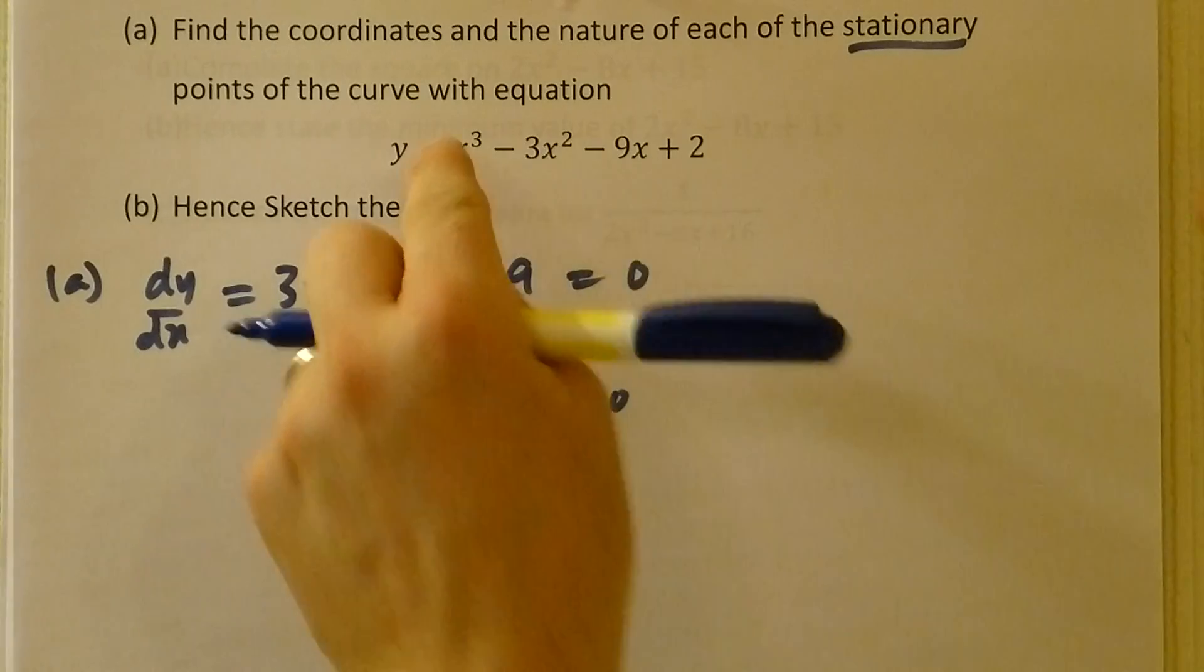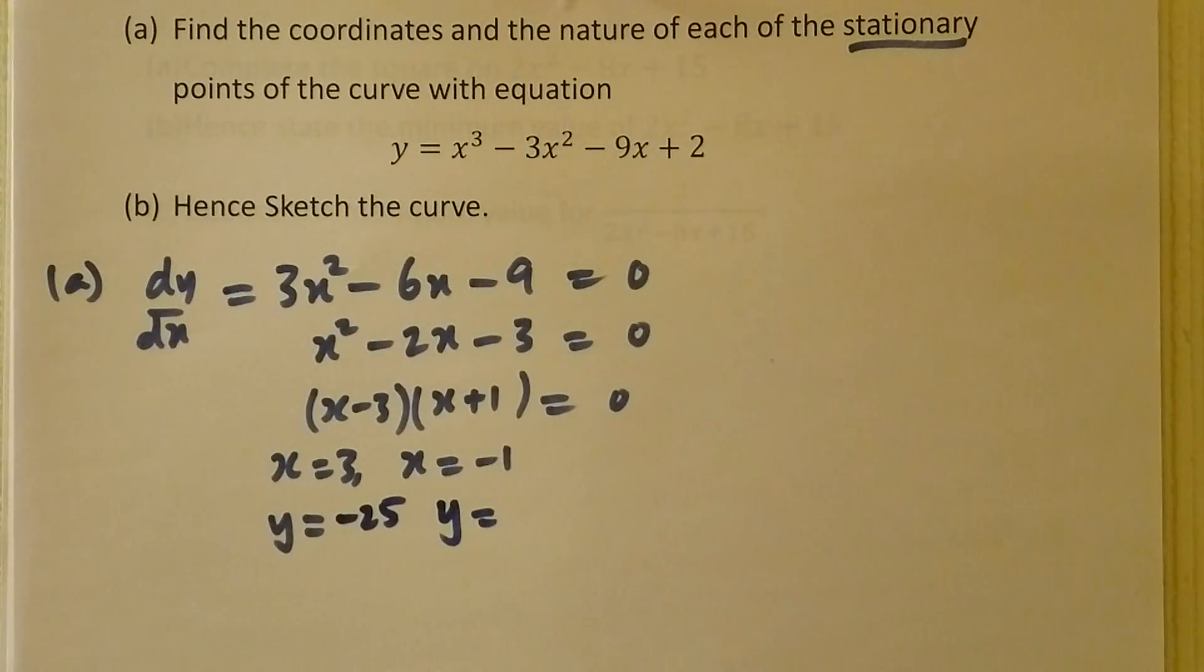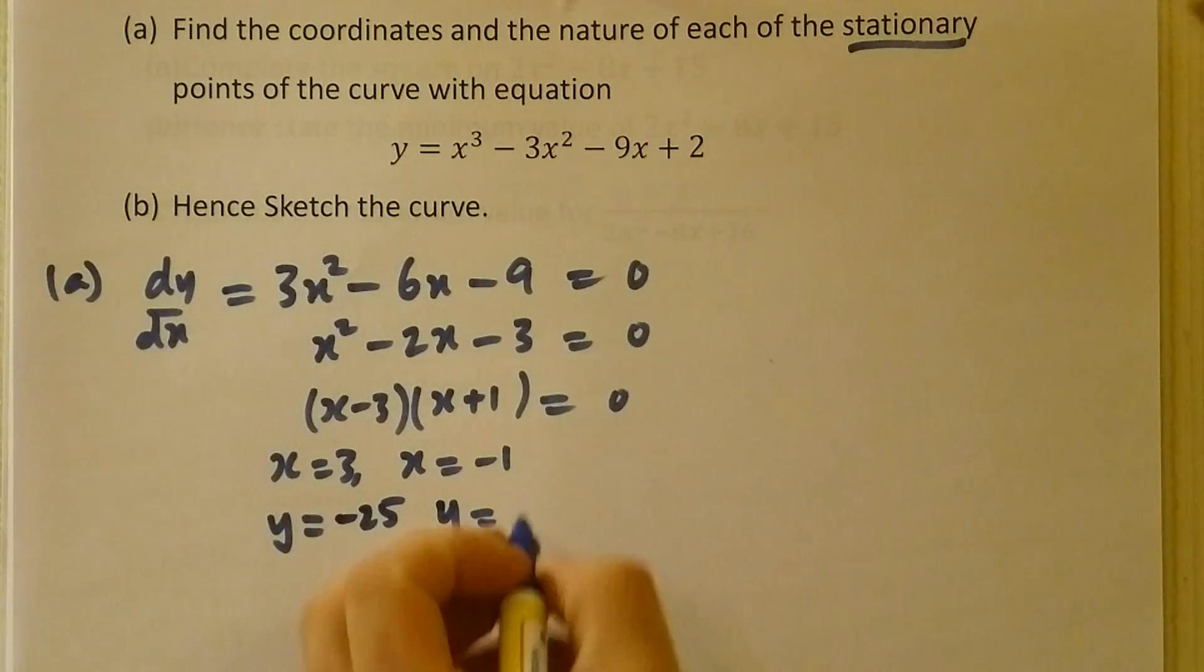And if I put -1 in there, I'll get the y-coordinate for the other one, which will be -1 (-1 cubed), minus 3 (-3 lots of 1 squared), and positive 9 (that is -9 times -1), and plus 2, which gives us a total of 7.